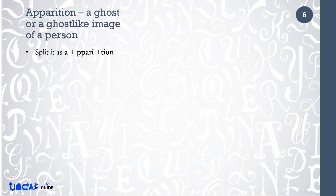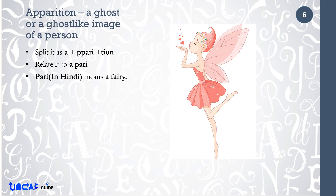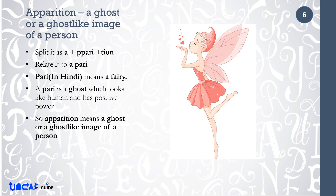Apparition means a ghost or a ghost-like image of a person. Split it as A plus Pari plus Shan. Relate it to A Pari. Pari in Hindi means a fairy. A pari is a ghost which looks like a human and has positive power. So, apparition means a ghost or a ghost-like image of a person.